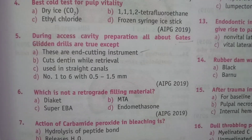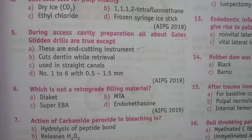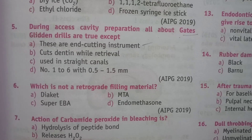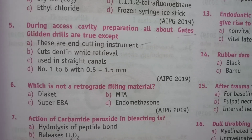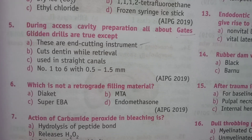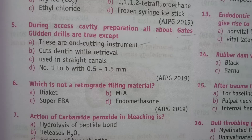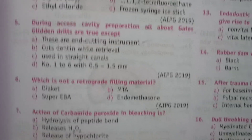Next question: which is not a retrograde filling material? Options: A, Diaket; B, MTA; C, Super EBA; D, Endomethasone. The answer is D, Endomethasone.